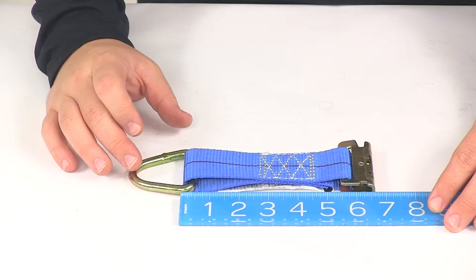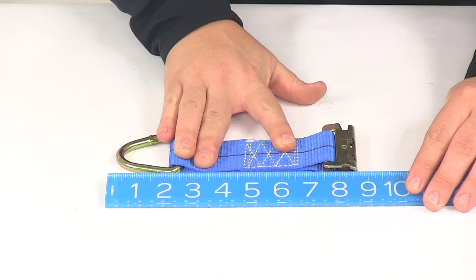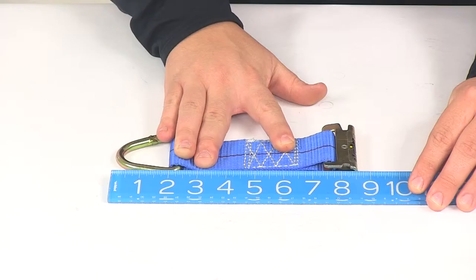If we take a measurement from the E-Track connection point, this groove right here, to the end of the D-ring, that gives us a measurement of about eight and one quarter inches.